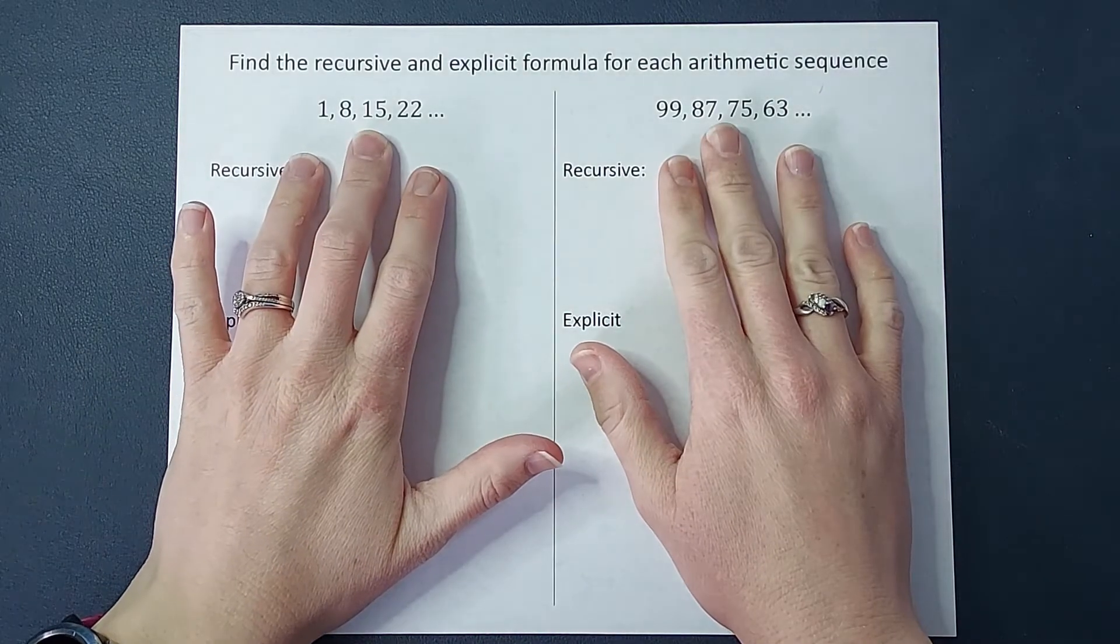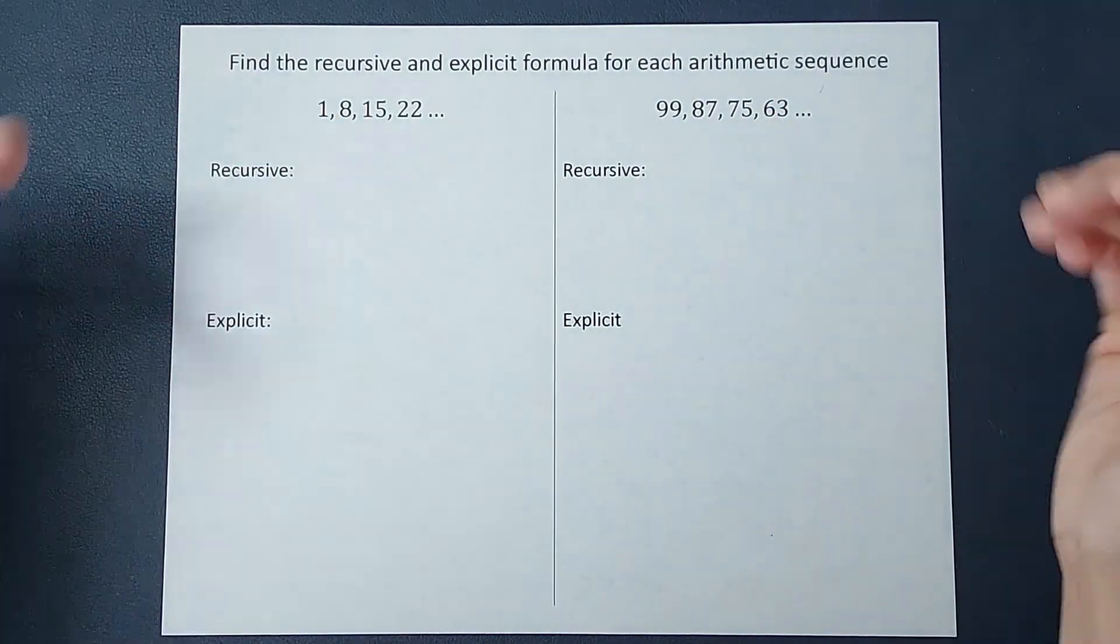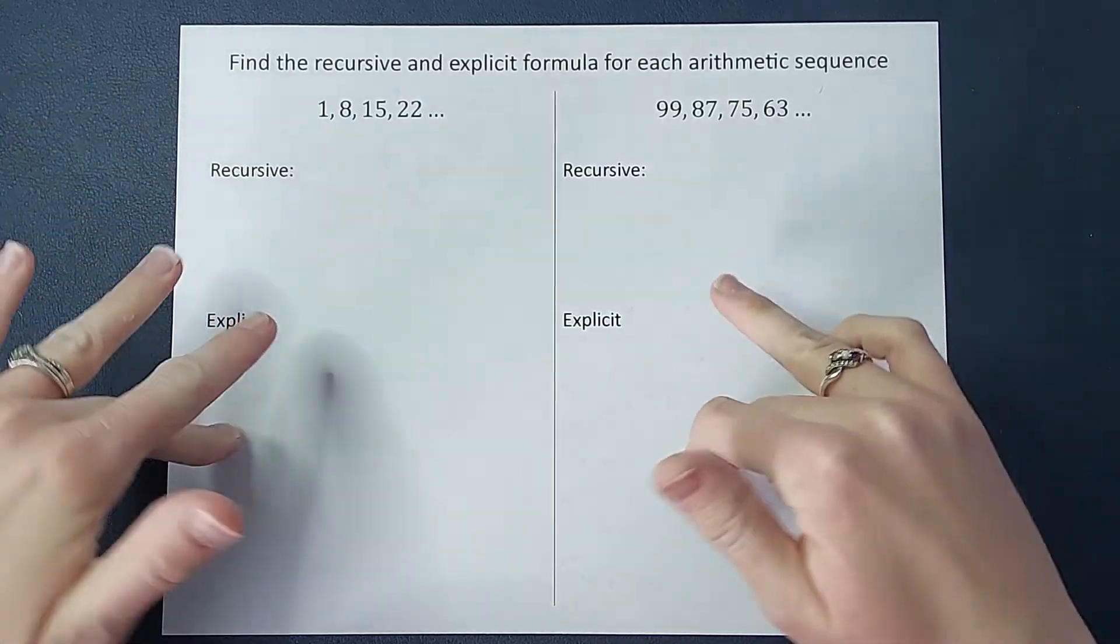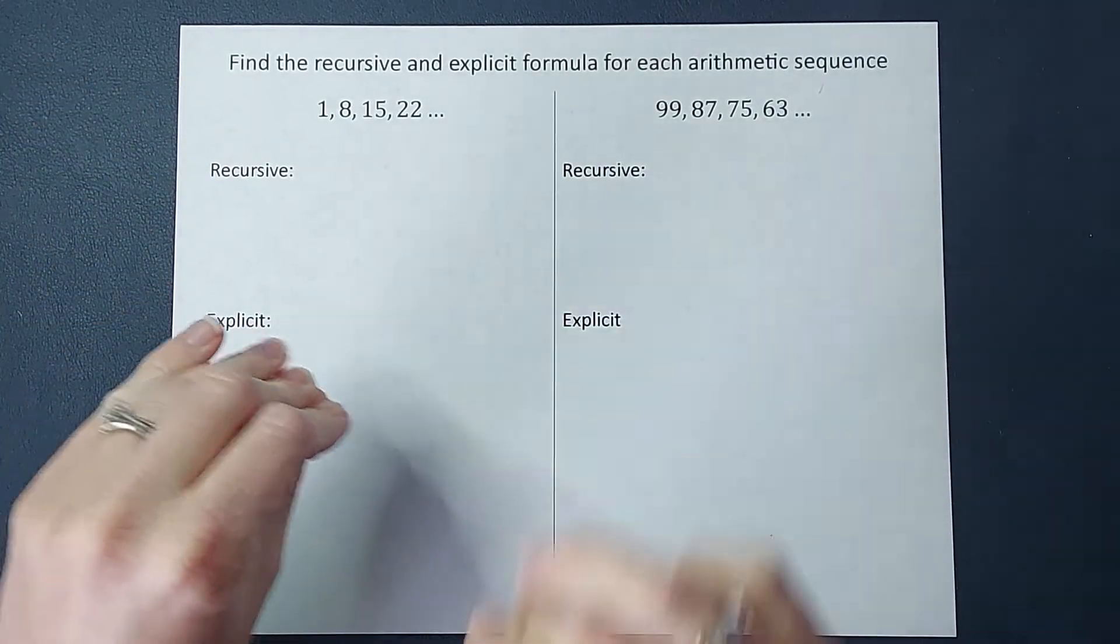Hey you guys, we have two arithmetic sequences here and we're going to find the recursive and explicit formula for each.